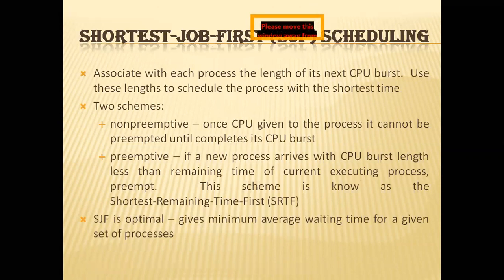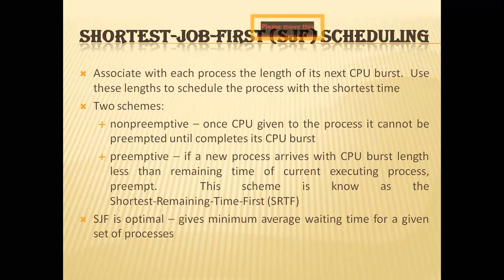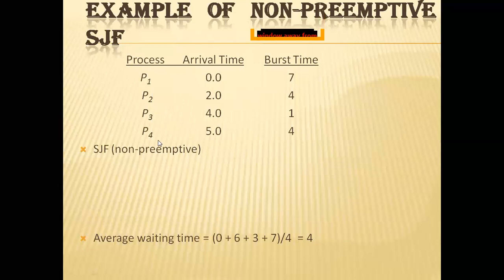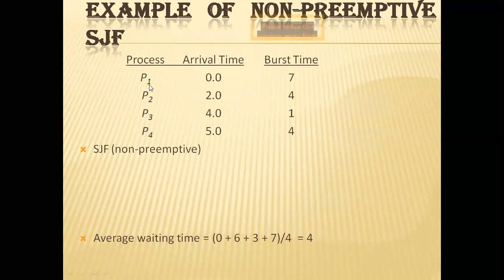The next type is Shortest Job First (SJF) scheduling — a different approach to CPU scheduling. This algorithm associates with each process the length of its next CPU burst. The key concept is that the CPU is allocated to the process with the least CPU burst time. This algorithm can be implemented as both non-preemptive and preemptive. In this example, we have four processes P1, P2, P3, and P4 with their arrival times: P1 at 0, P2 at 2.0, P3 at 4.0, and P4 at 5.0, with burst times of 7, 4, 1, and 4 milliseconds respectively.